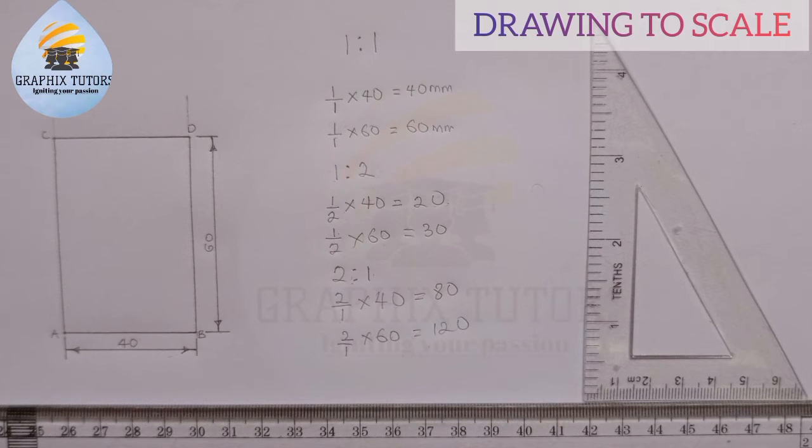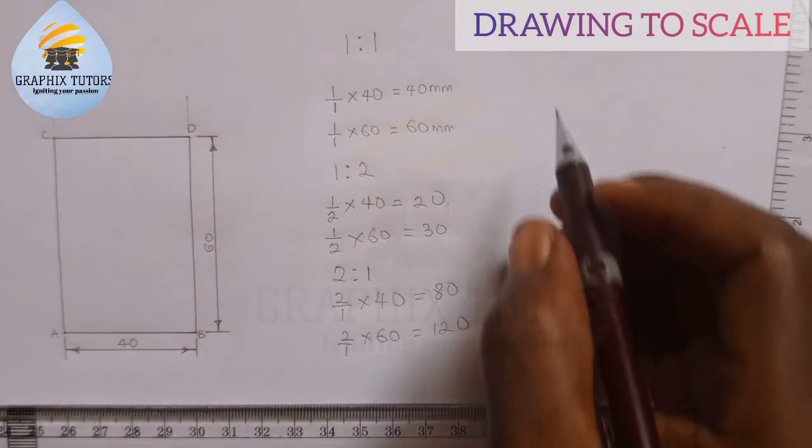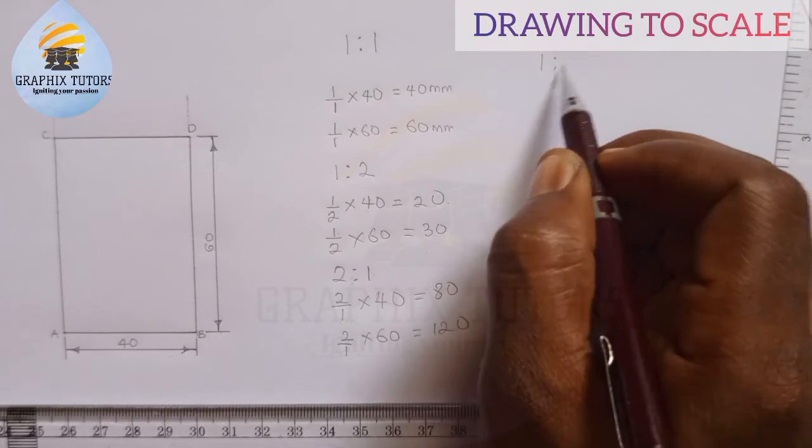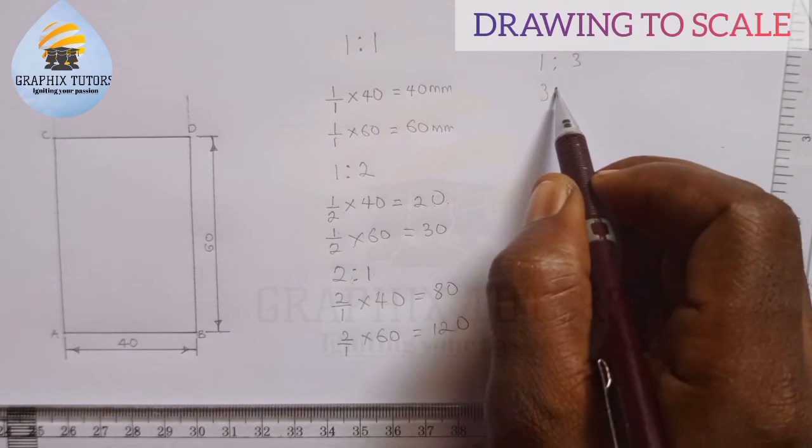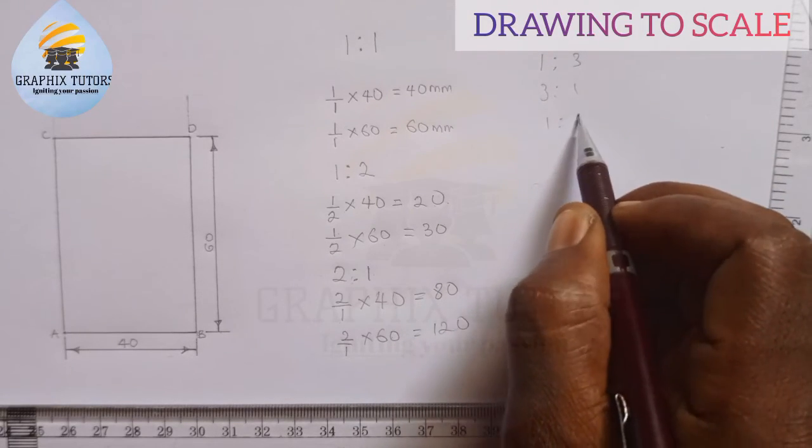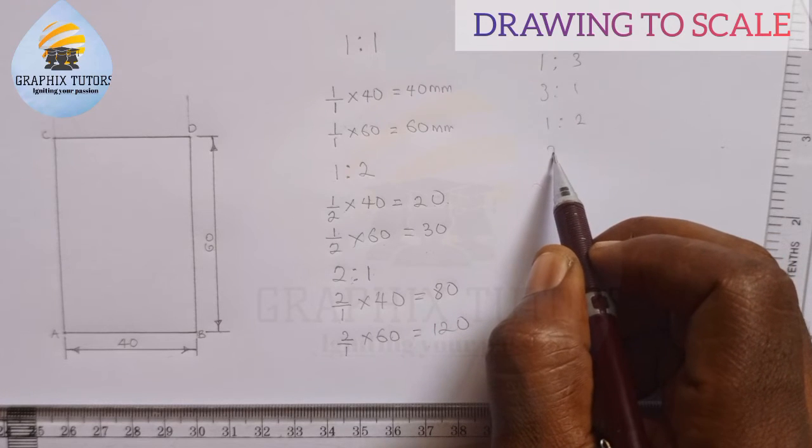So I did not show you how to draw all of this. We are now told, whenever you have probably one is to three, three is to one, one is to two, two is to one.